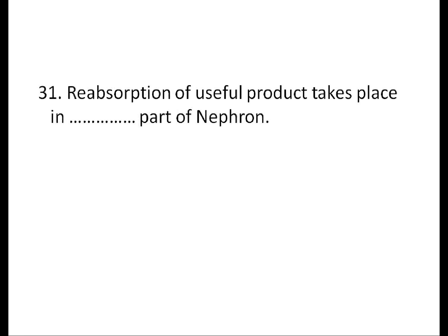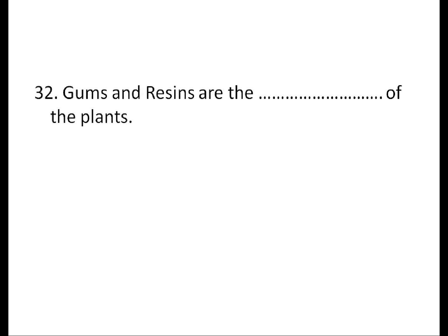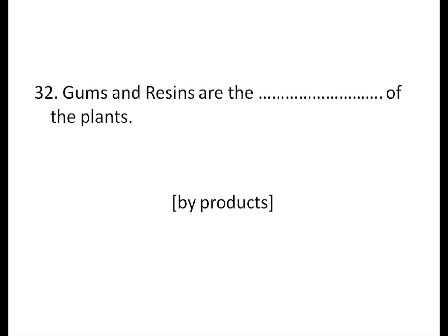Reabsorption of useful products takes place in which part of the nephron? The proximal convoluted tubule (PCT). Gums and resins are the byproducts of the plant.